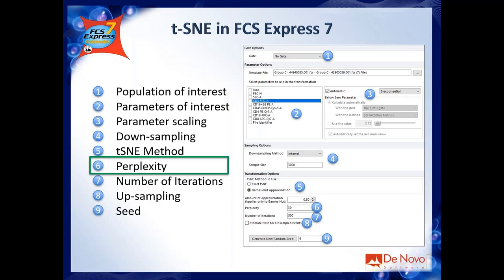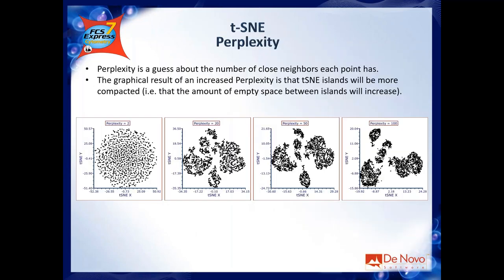Step six: perplexity. Most of you have at least heard of perplexity. It seems scary but you don't need to be afraid of it. Perplexity is basically a hint you give to tSNE about how large you expect the islands to be — in other words, it is a guess about the number of close neighbors each point has. You need to give this hint because of the crowding issue: if you are plotting a lot of events, tSNE tends to spread them out, so you need perplexity to help make islands more compact and increase the white space between them.